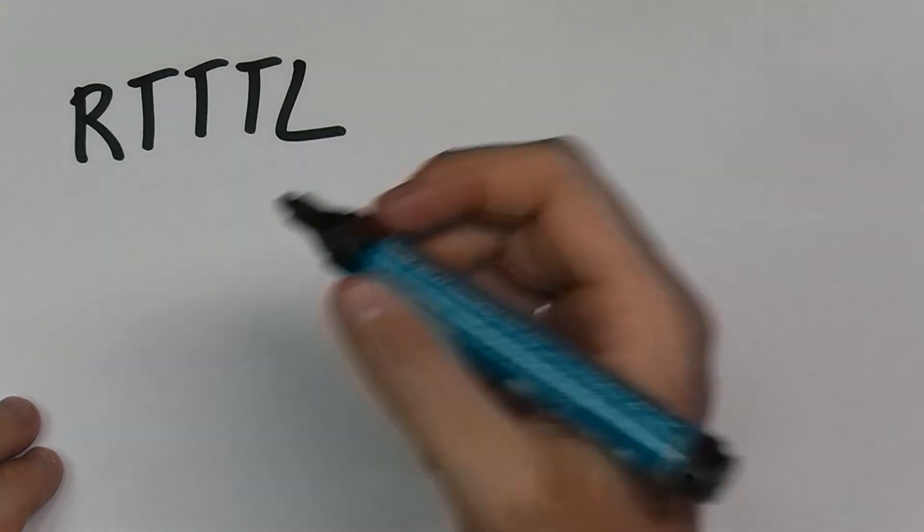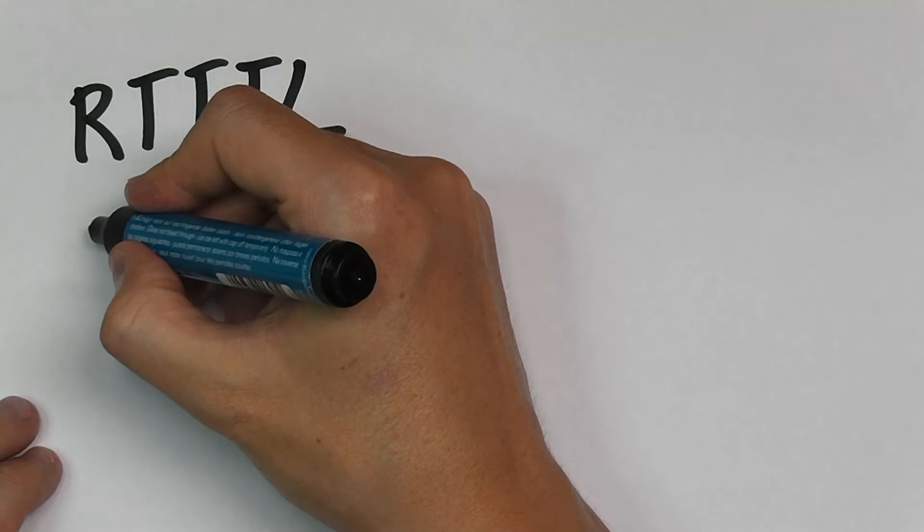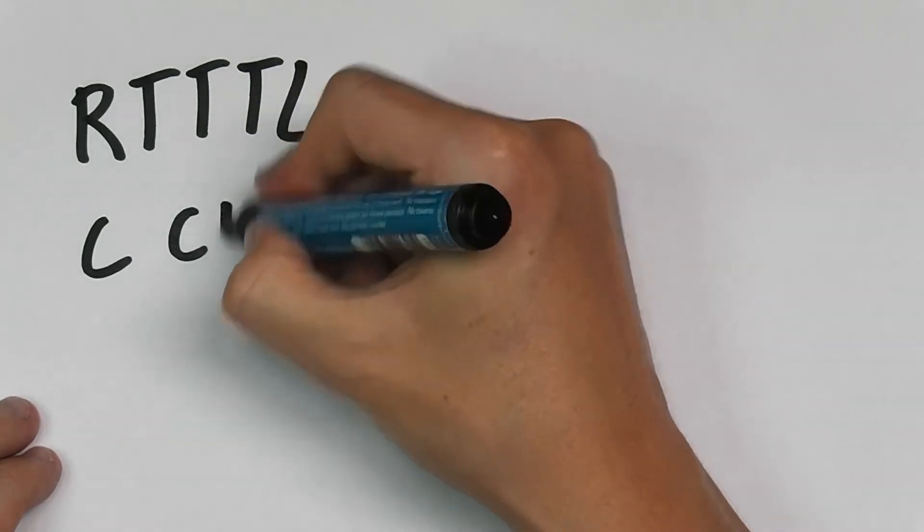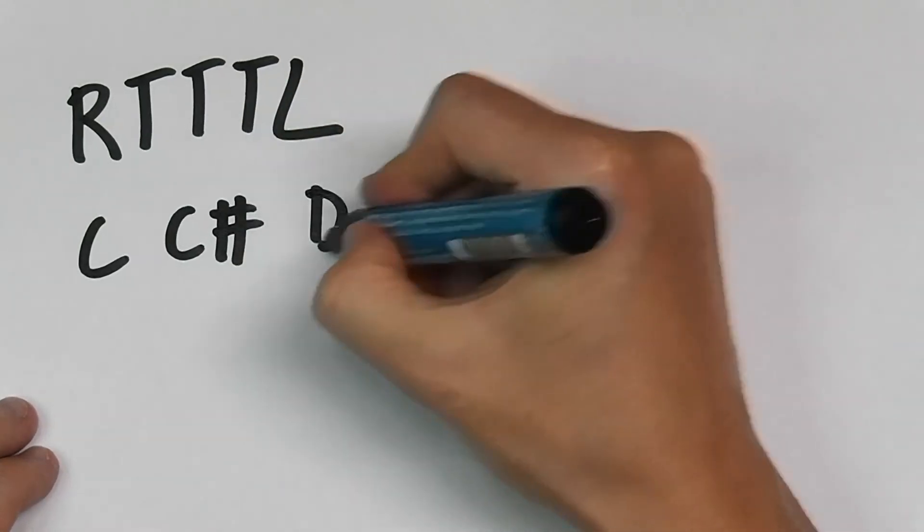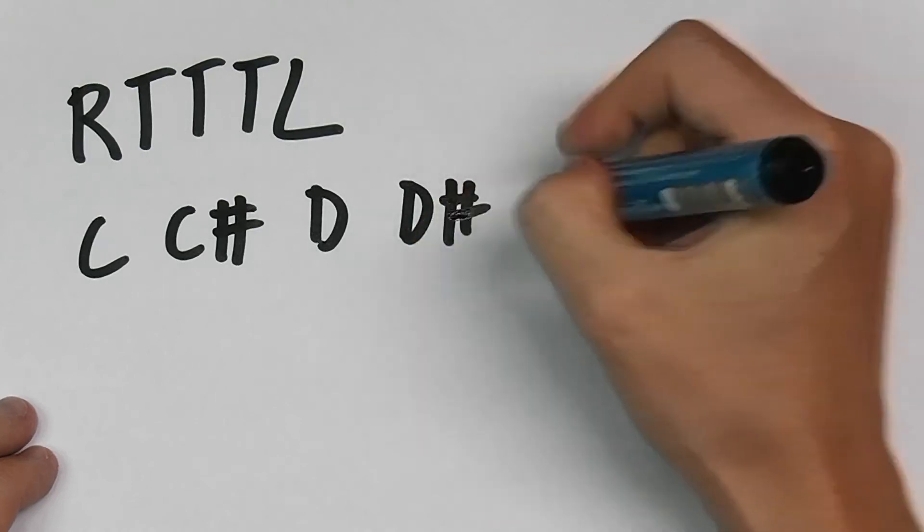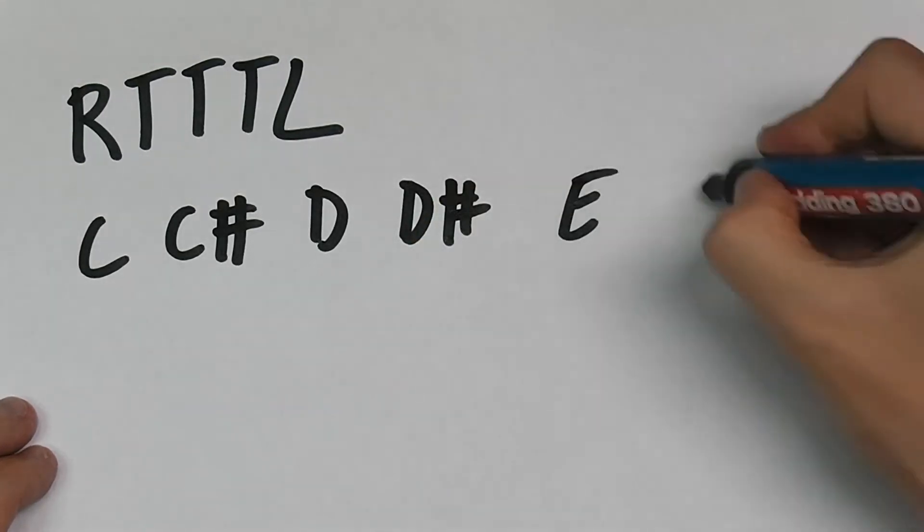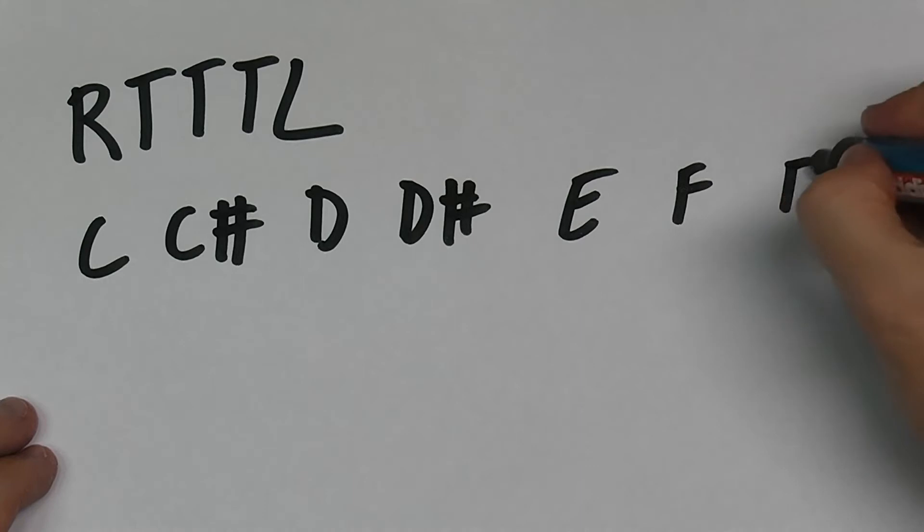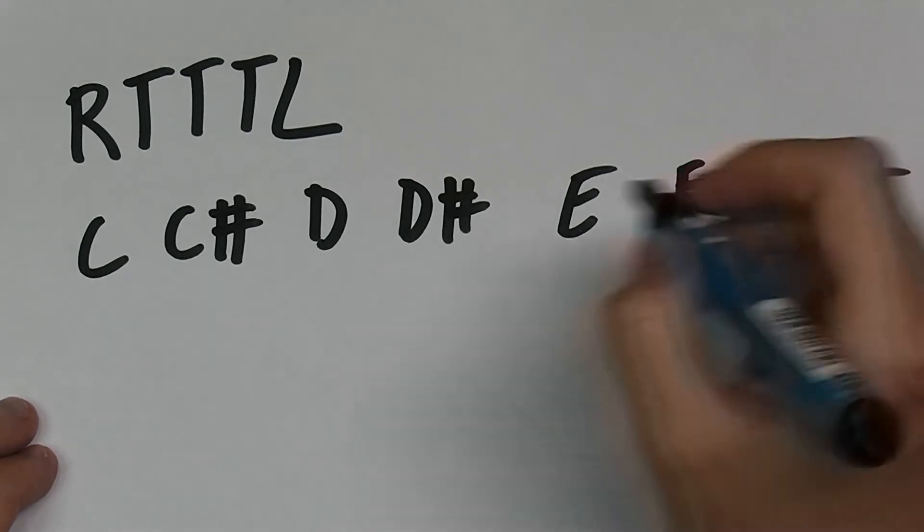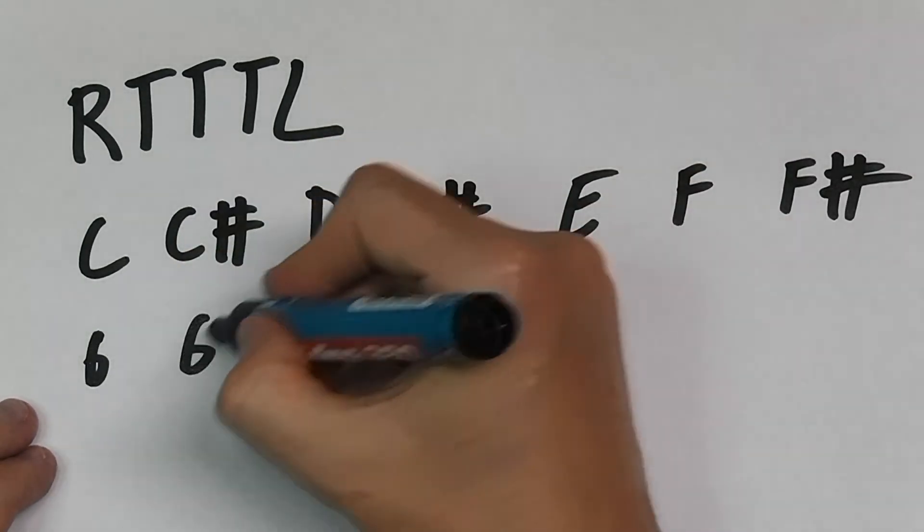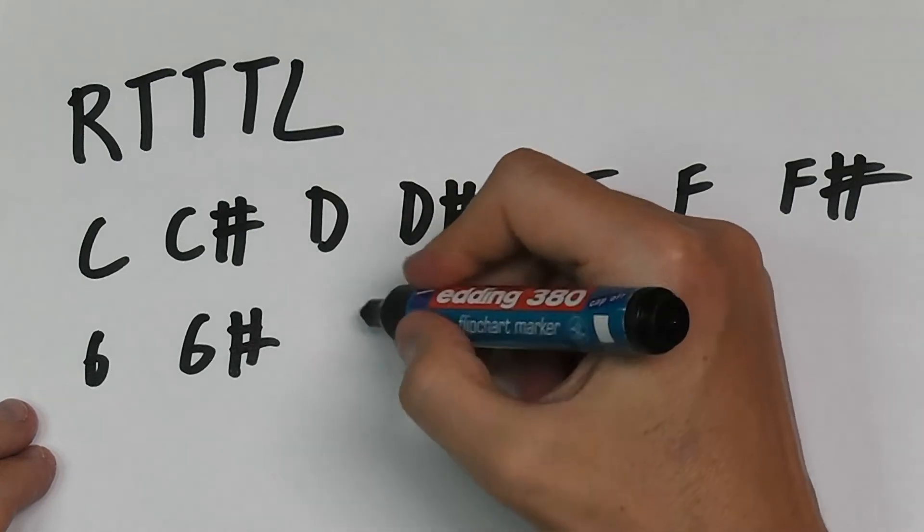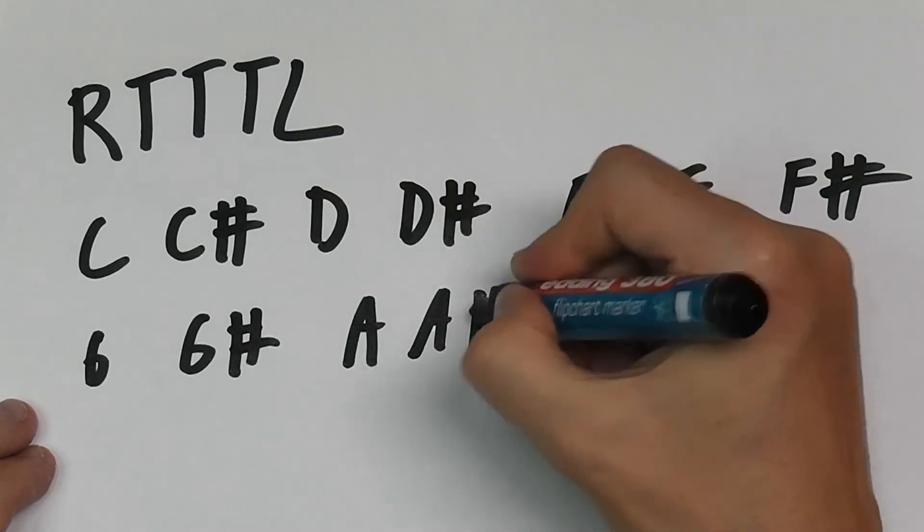The way it works is that there are 12 notes which are specified. I don't know a lot about music, so please excuse me if I say something really dumb here. It's just the way I understood it.